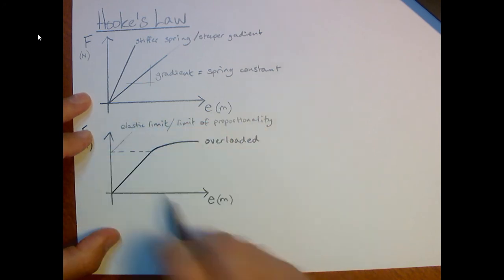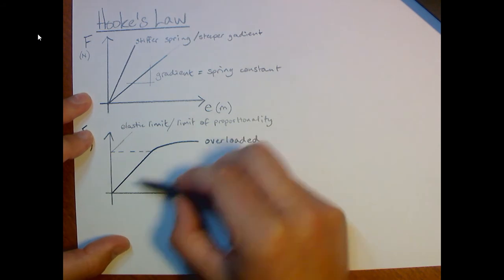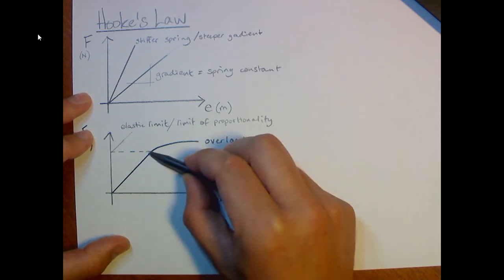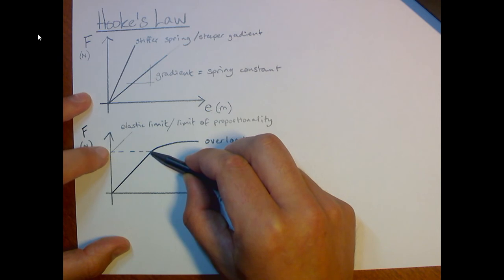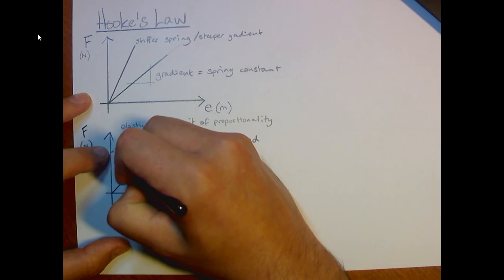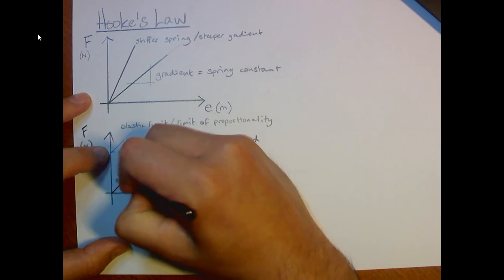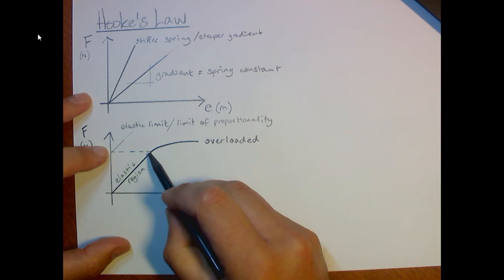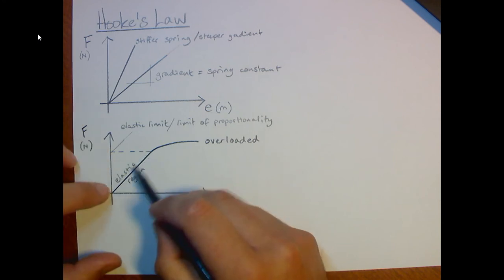But it's widely known as either of these, the elastic limit or the limit of proportionality. This is the limit that the spring can be extended and remain elastic. And remember, elastic means that it will return to its original shape. So we've got this elastic region here, which is linear.